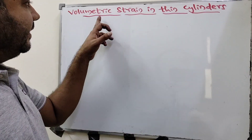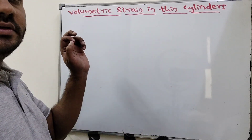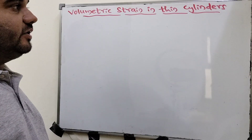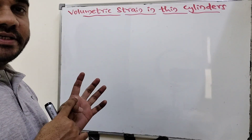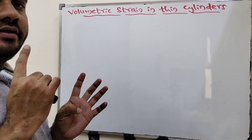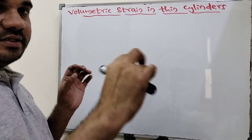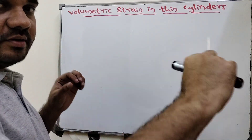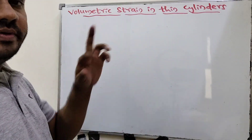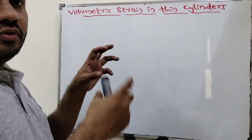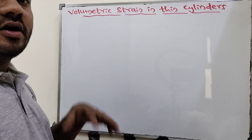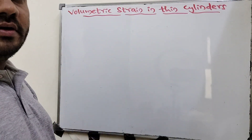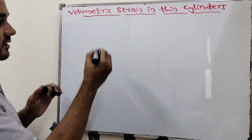In this video we will derive the volumetric strain in thin cylinders. In the last video we derived the circumferential strain and the longitudinal strain in thin cylinders — the strain developed in the circumference and the strain developed in the length. Now we will derive the overall total volume change of the thin cylinder.